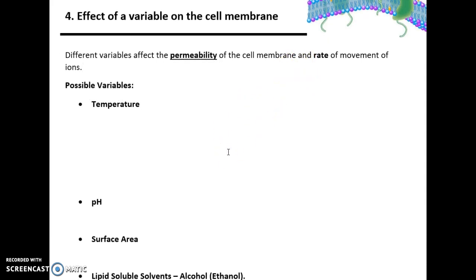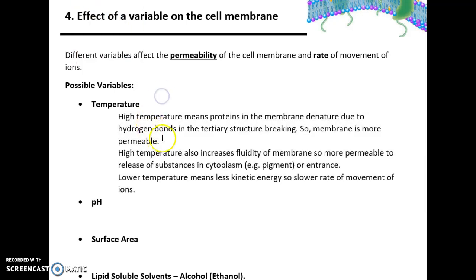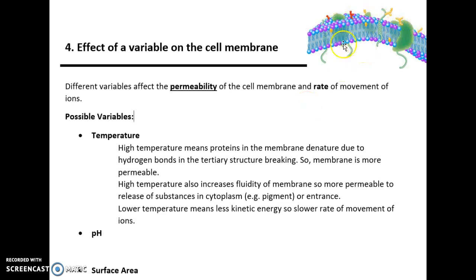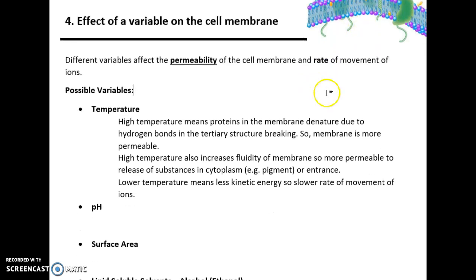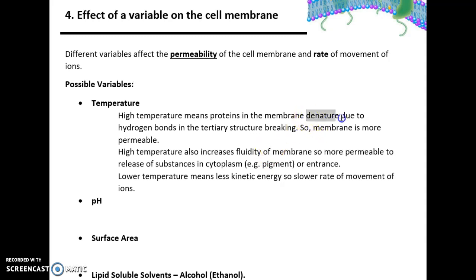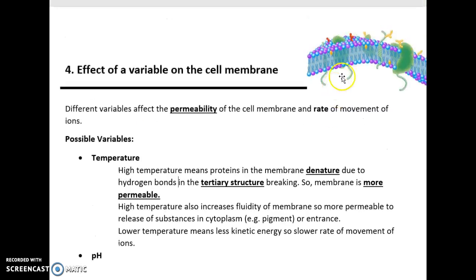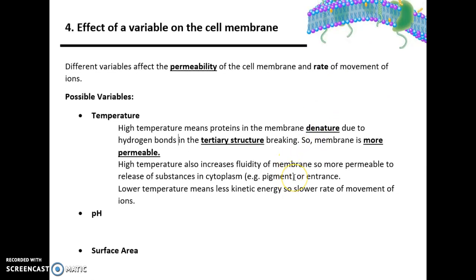Here are some variables that they could give you in the exam. The most obvious one is temperature. If temperature increases, it means that proteins—carrier proteins, channel proteins, glycoproteins, and receptors in the membrane—will denature due to hydrogen bonds in the tertiary structure breaking. Therefore the membrane is more permeable. These are not enzymes, so the active site isn't denatured, just the tertiary structure binding site denatures.